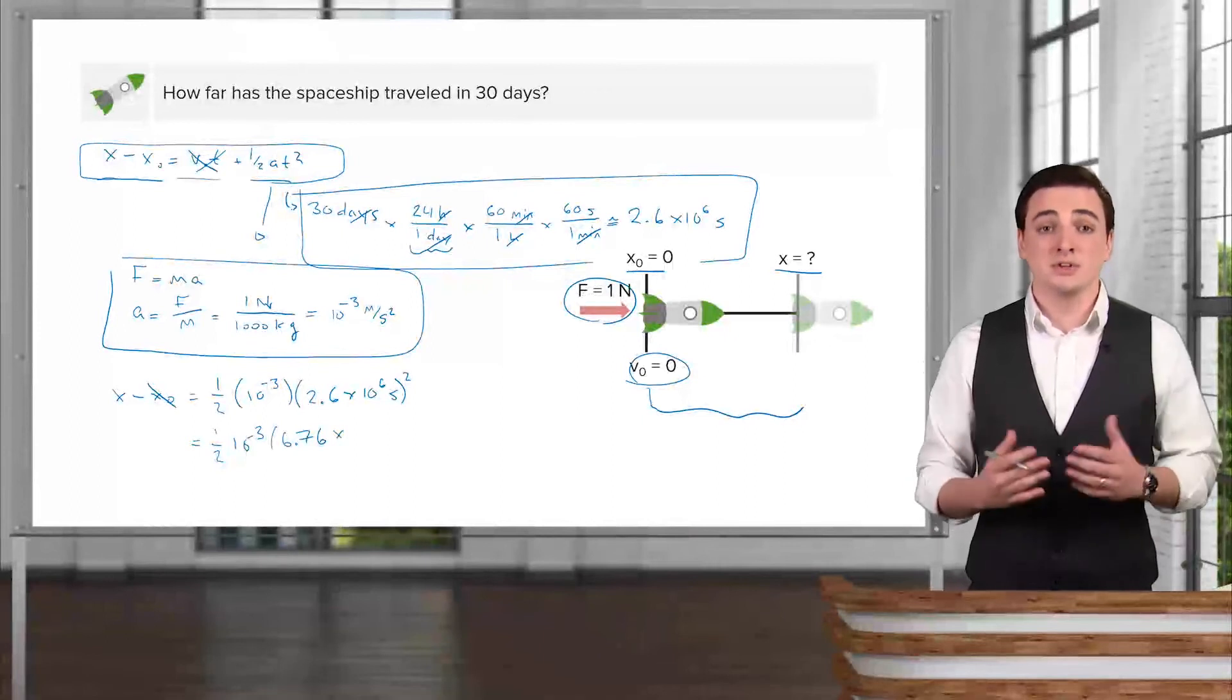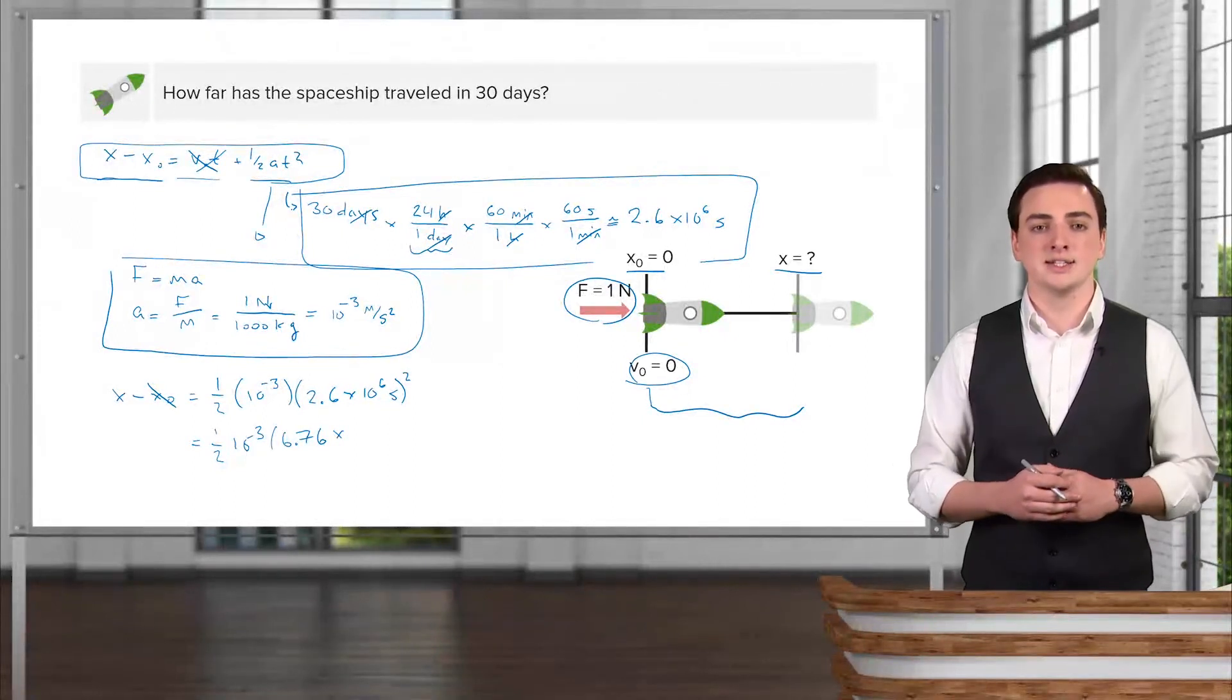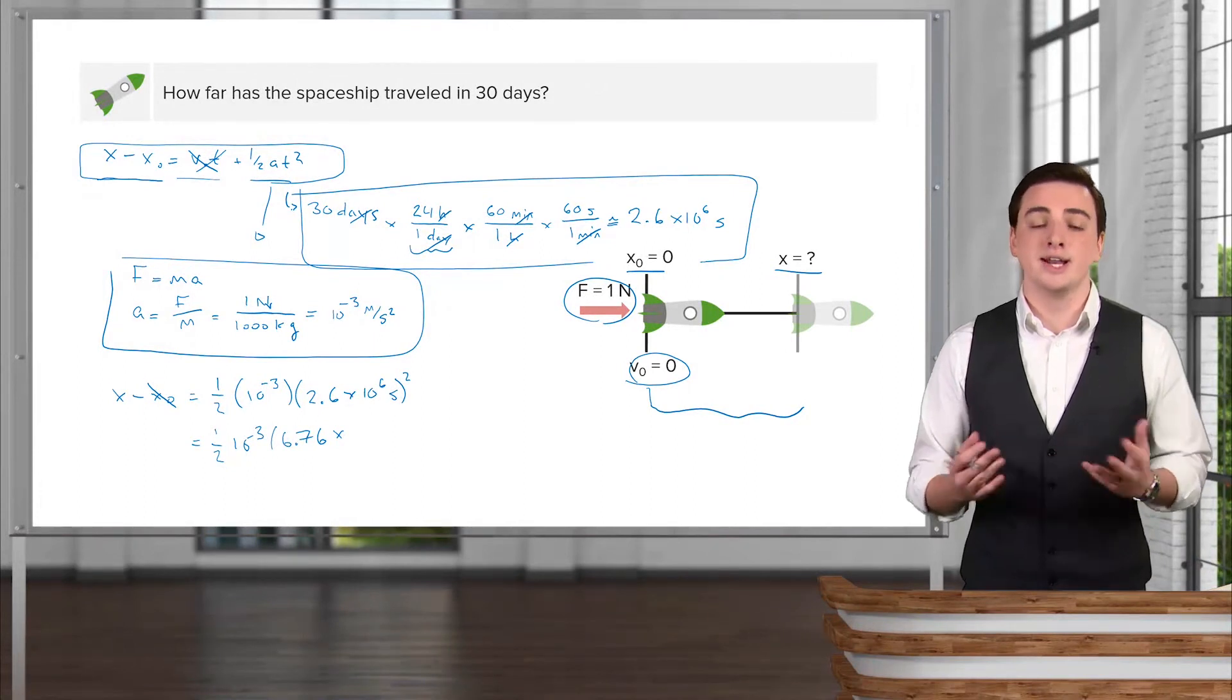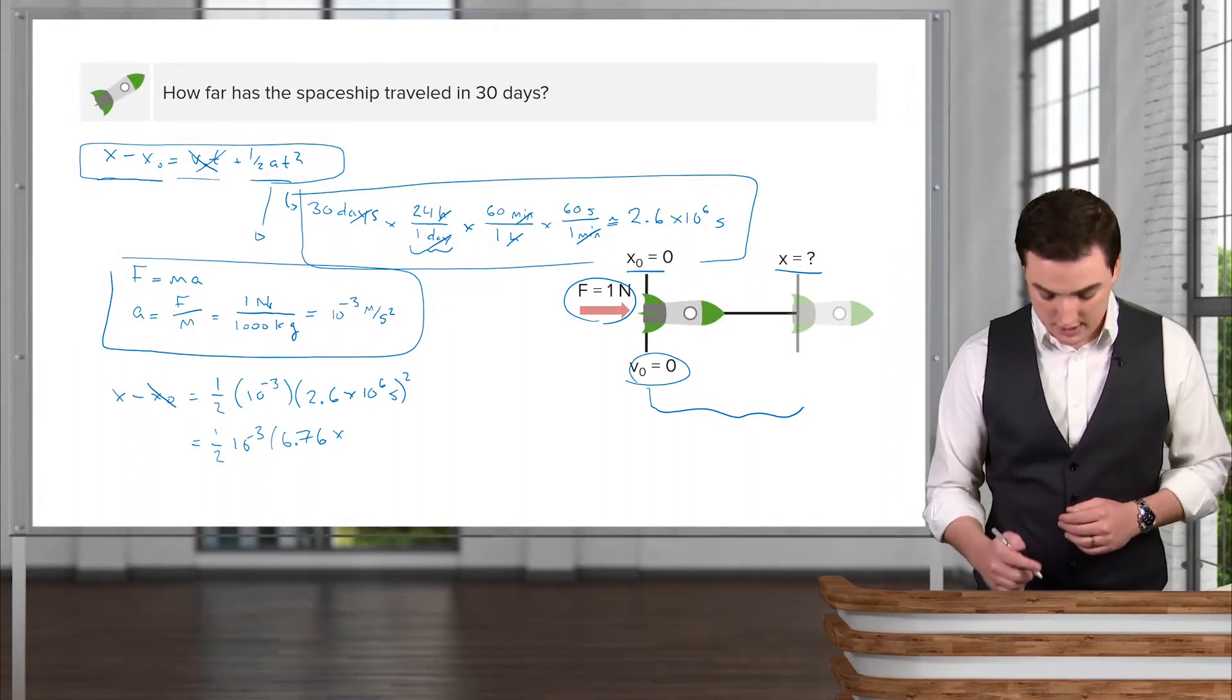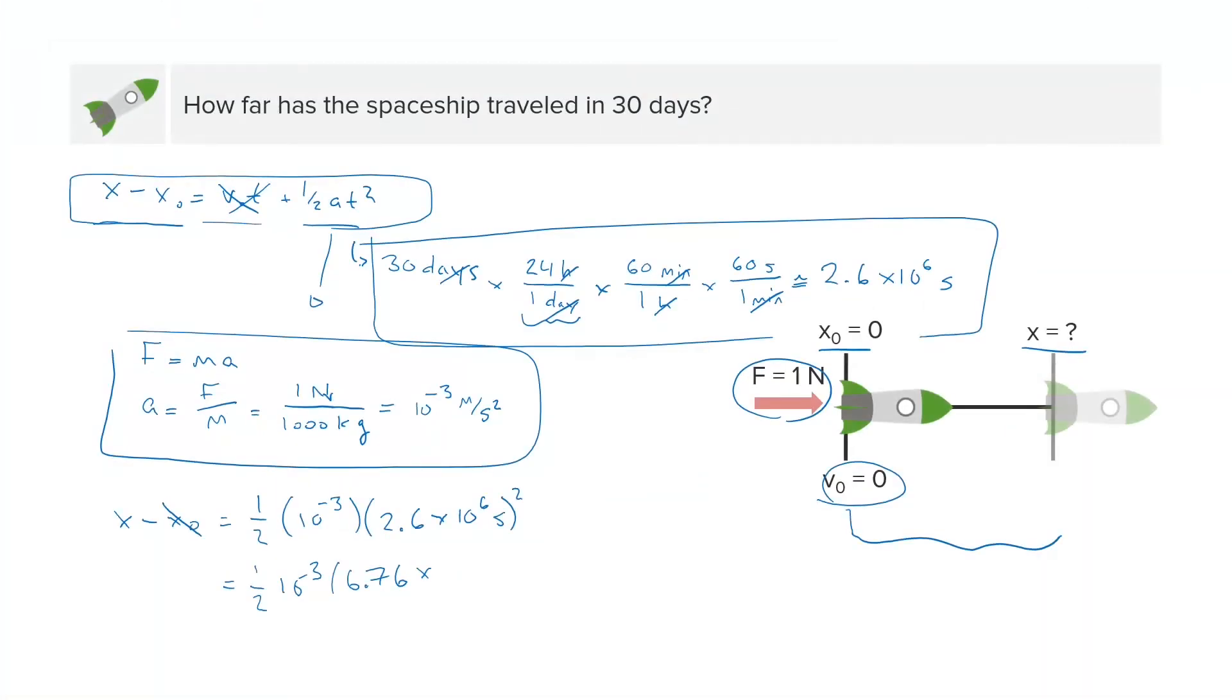So just by doing something very quickly and simply, we can sometimes simplify our analysis and find out what the correct answer, in an exam setting especially, could be without having to deal with any tricky numbers like these ones. So this is 6.76 times, and then we have 10 to the sixth squared, which will be 10 to the 12 since we multiply these exponents.